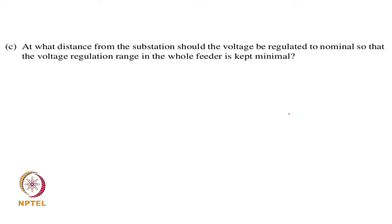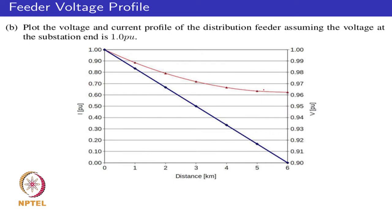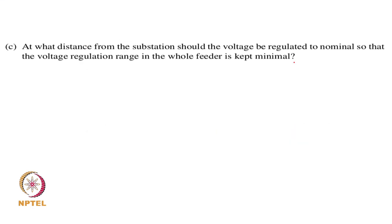The objective is not just to have the loads at the feeder end see close to 1 per unit voltage, but to have the average user on this feeder see voltage close to 1 per unit. It would be ideal to ensure that the deviation at both ends of the feeder stays roughly equal, keeping the whole feeder within the same tolerance range. The question is at what distance from the substation should the voltage be regulated to its nominal value.